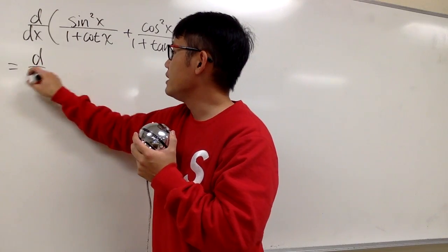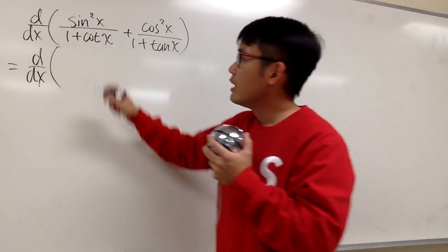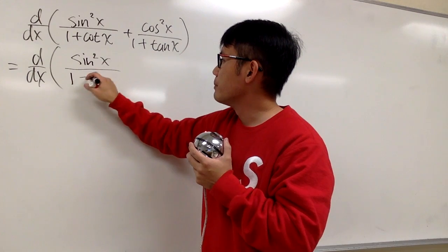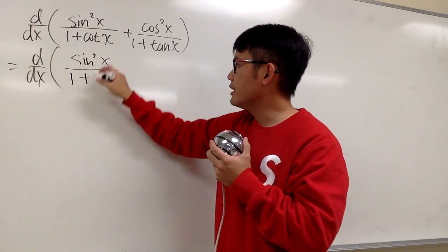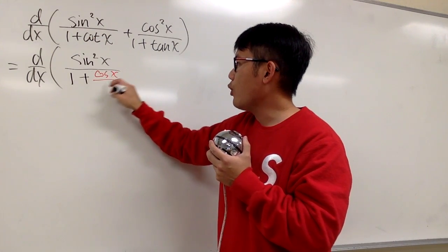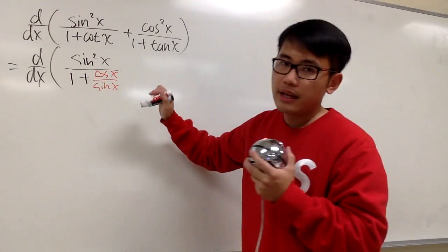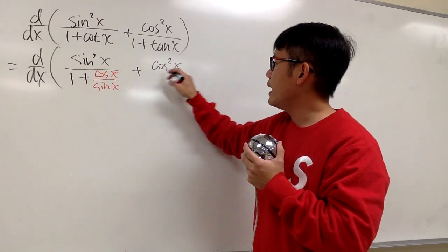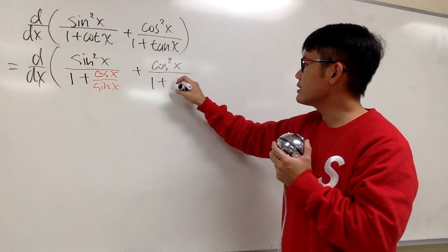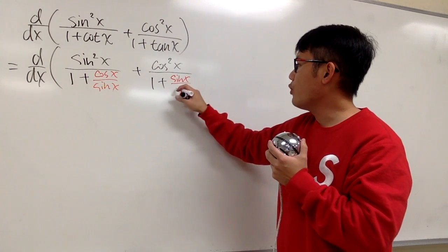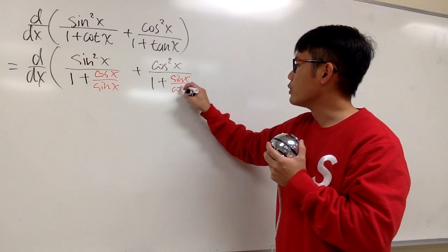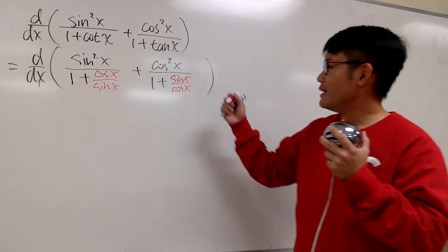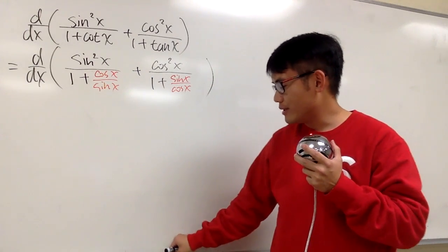I'm going to first keep the d/dx in the front and make some changes inside. I will keep sine squared x over 1, still the 1 plus, and for cotangent x, we will write this as cosine x over sine x. For the second term, we have cosine squared x over 1 plus, and for tangent x, this is the same as sine x over cosine x. Now everything is in terms of sine and cosine.